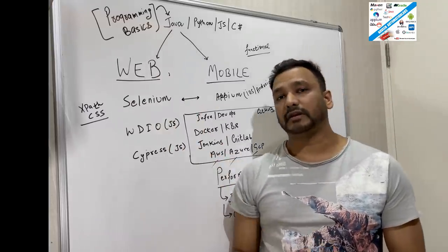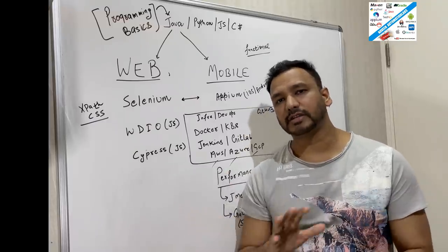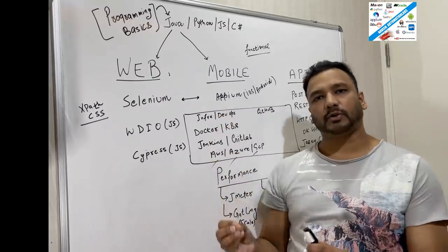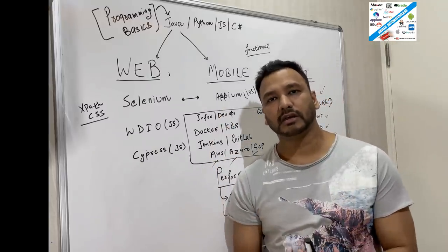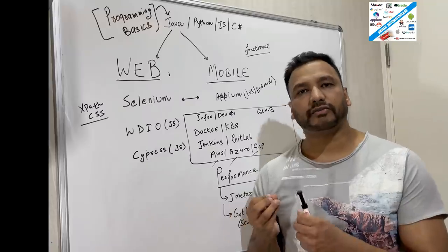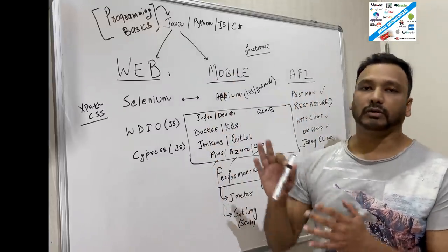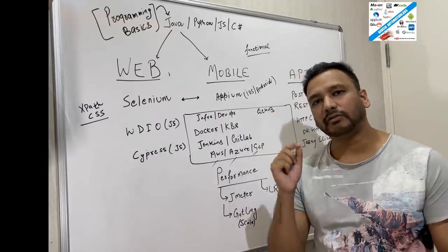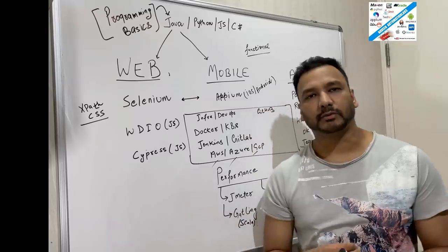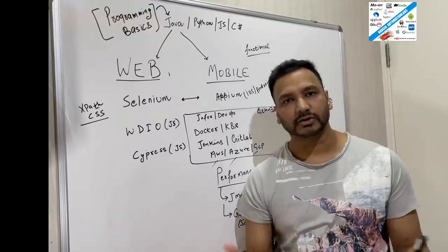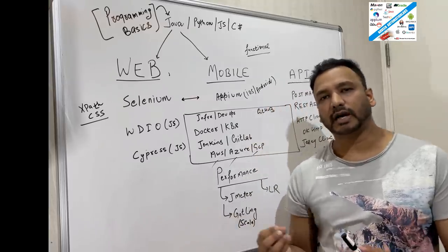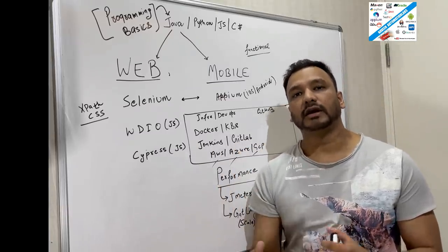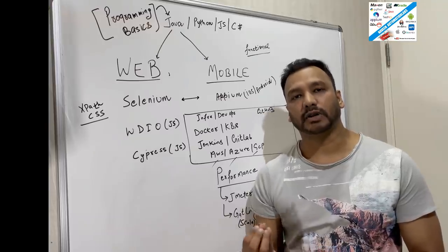So if you start with the basics of programming first, without programming guys, you cannot survive in market and automation. It's very difficult to survive because basics of programming — how to write basic logic, the basic fundamentals of any programming language — you can pick. I'm not forcing you to learn only Java or Python. It's totally your choice, but you have to think smartly. There are people in the market who say the programming language doesn't matter. I totally agree with that. But you have to think smartly about which programming language for that particular tool is more popular and more demanding in the market.